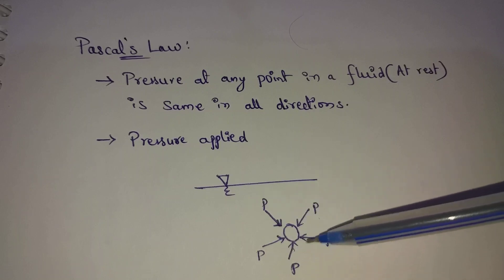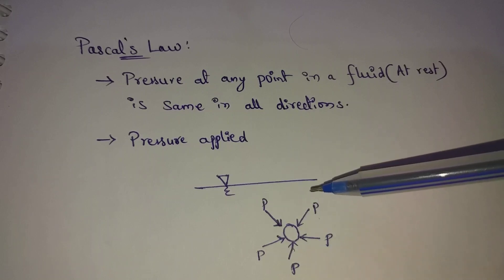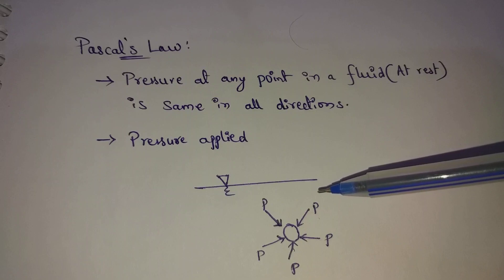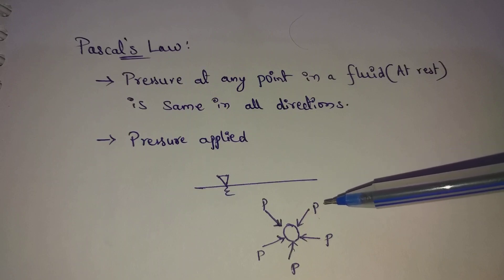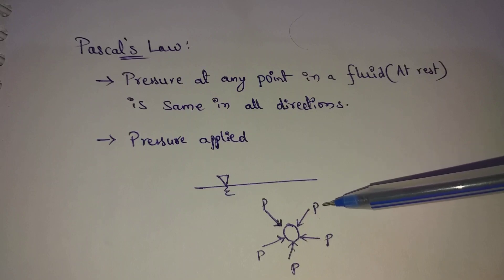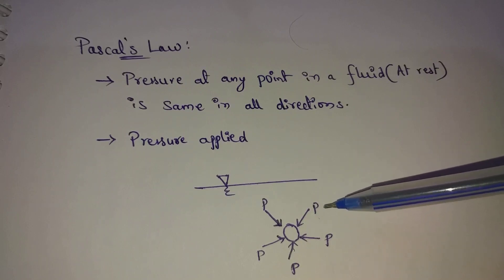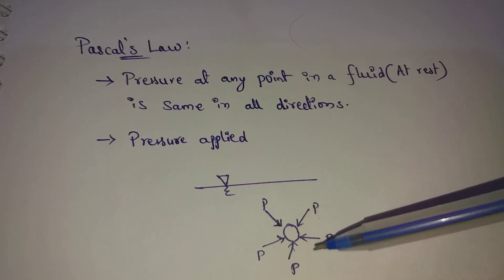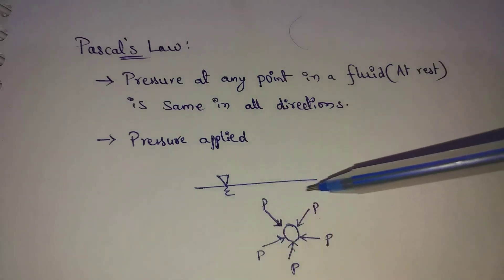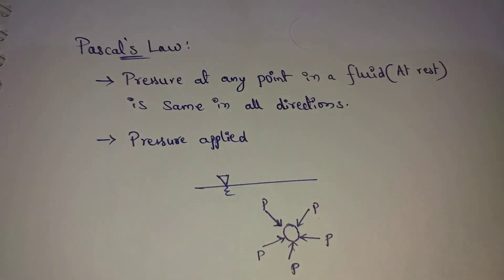In a confined fluid, for example, if pressure is 10, then in each and every direction the pressure is the same — pressure is 10 in all directions.